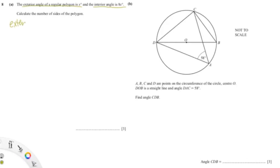We know that the exterior angle plus the interior angle equals 180 degrees. So the exterior angle is x and the interior angle is 8x, giving us x + 8x = 180. Adding those up gives 9x = 180, so x = 180 over 9, which is 20.